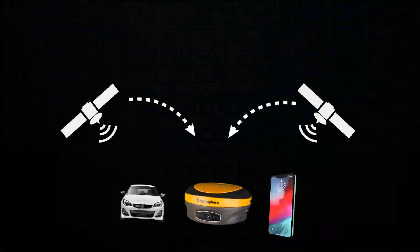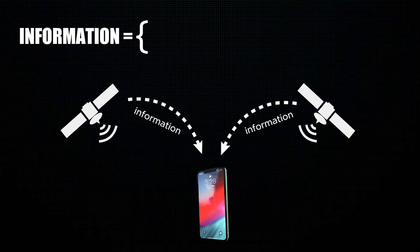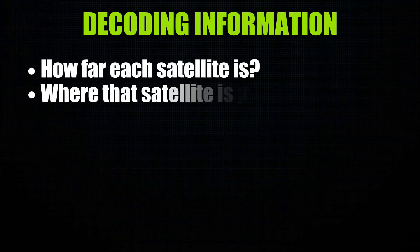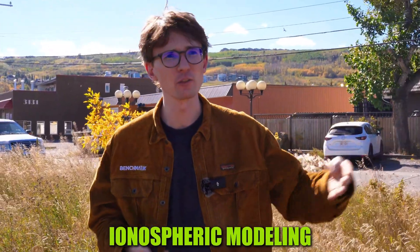Now that we understand what is contained in the satellite signals, we need to understand what our receiver is doing. Pretty much anything that has a GNSS chip inside of it — whether it be your phone, the GPS on your car, or an RTK receiver — is going to calculate its position in the same manner. As these signals arrive, your device decodes that information and strips out what it needs: how far each satellite is, where that satellite is positioned in orbit, whether any error correction is needed. Advanced receivers may even include ionospheric modeling to make your position more accurate. Once all that information is decoded, the receiver will triangulate its position.